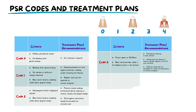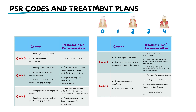Code 4 is used when pocket depths are greater than 5.5mm and the black band is not visible on the probe. If there is a PSR of 4 in a sextant or multiple sextants, a thorough periodontal assessment such as a full mouth periodontal chart is required. Depending on the severity, surgical interventions such as flap surgery or bone grafts may also be required. Scaling and root planing should be performed, followed by ongoing maintenance to manage the condition effectively.